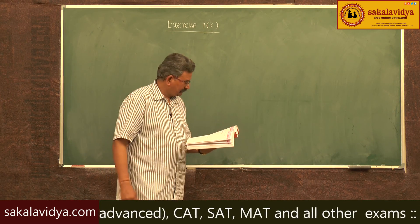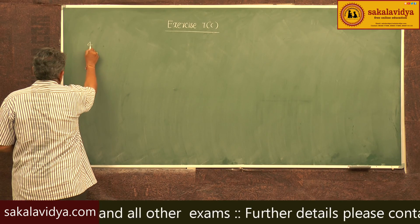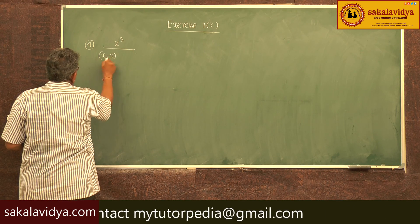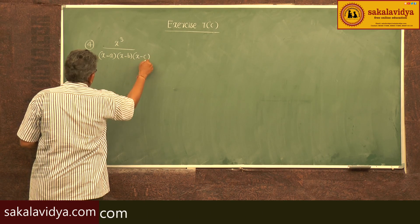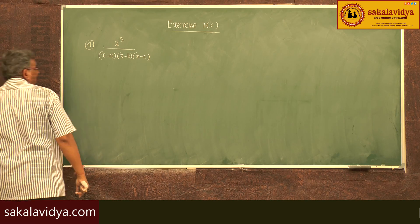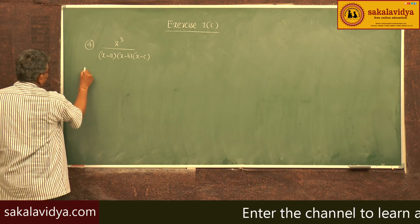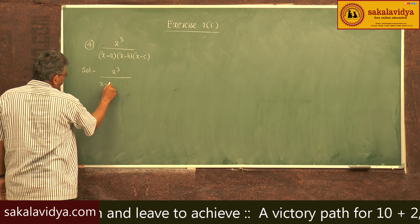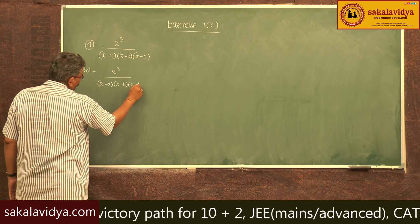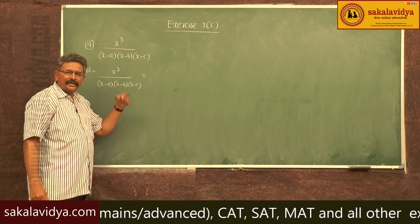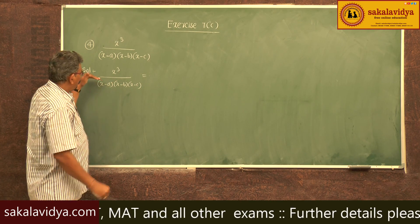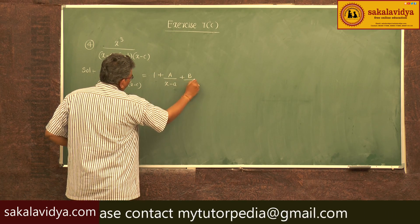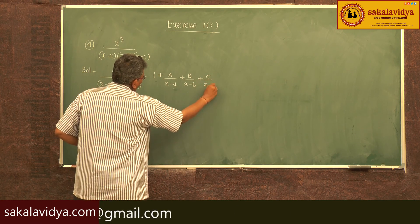Fourth problem: x cube by (x minus a)(x minus b)(x minus c). We have to find the partial fractions of this. Since it is an improper fraction and the degrees of both numerator and denominator are equal, we write it as 1 plus A by (x minus a) plus B by (x minus b) plus C by (x minus c).